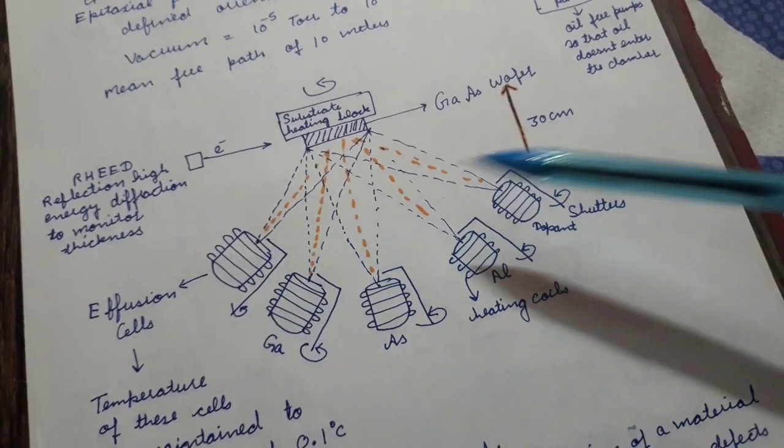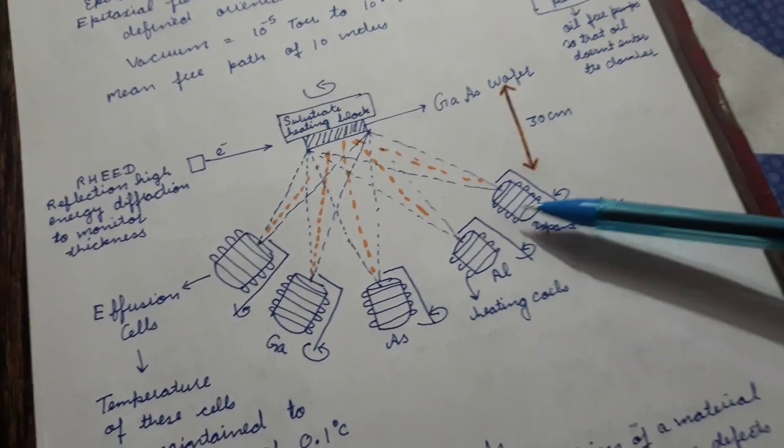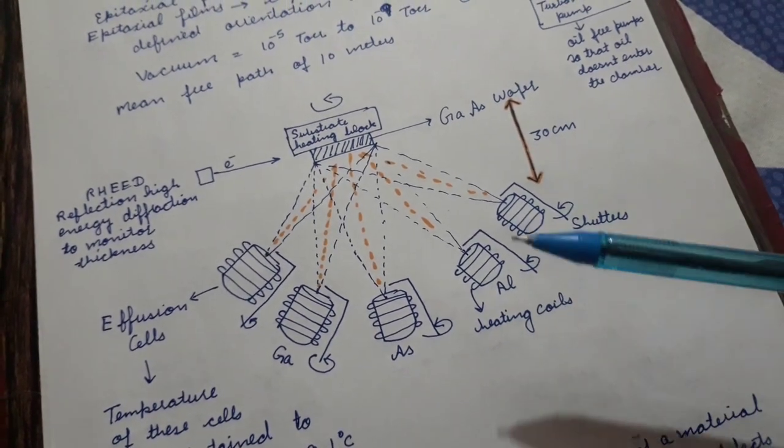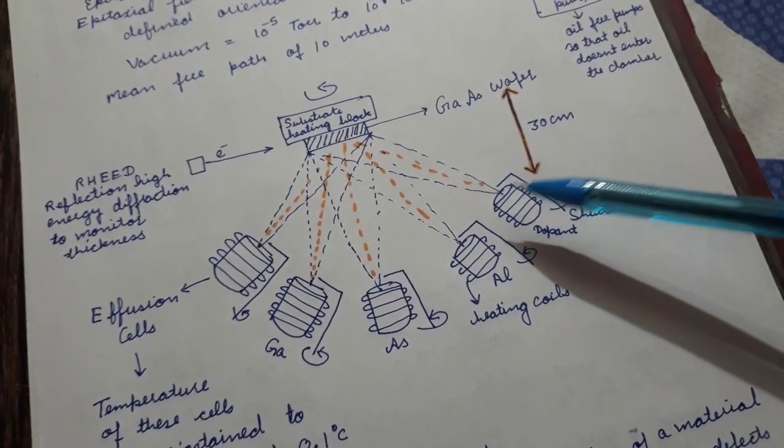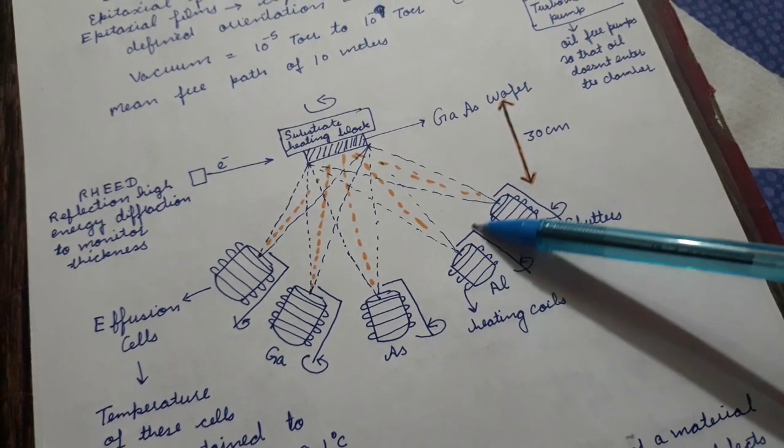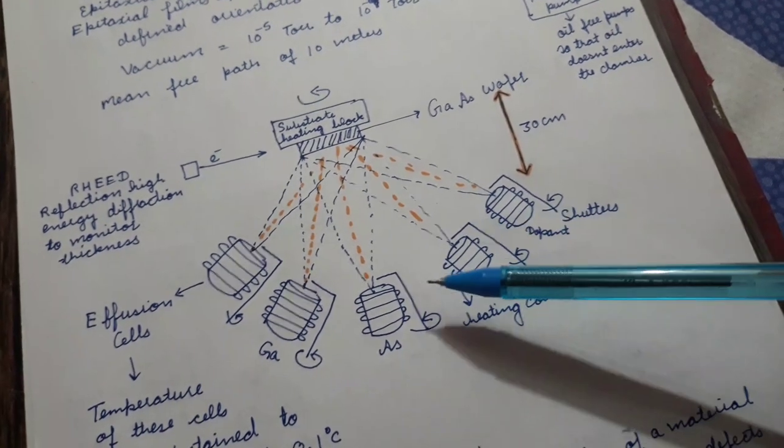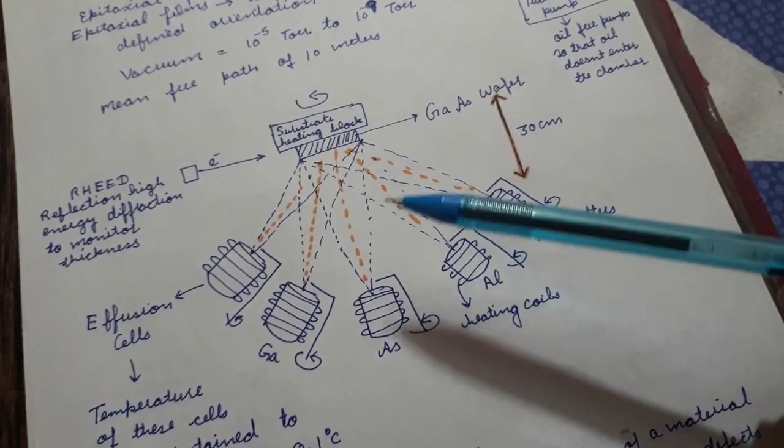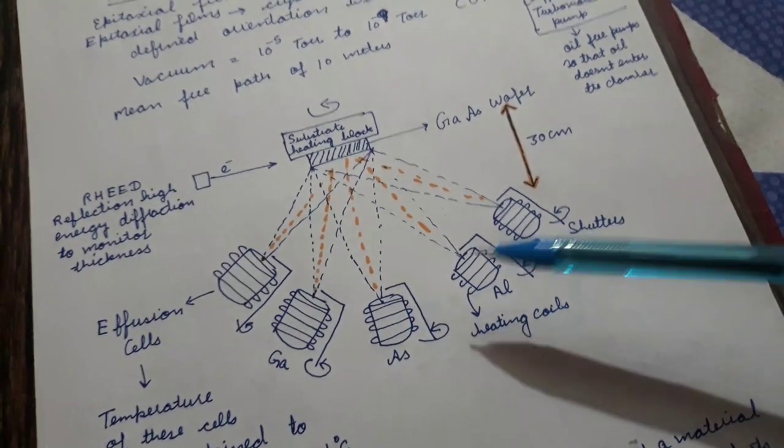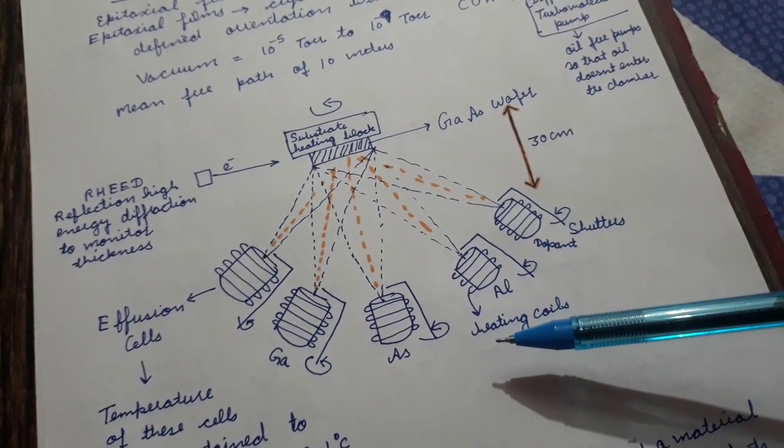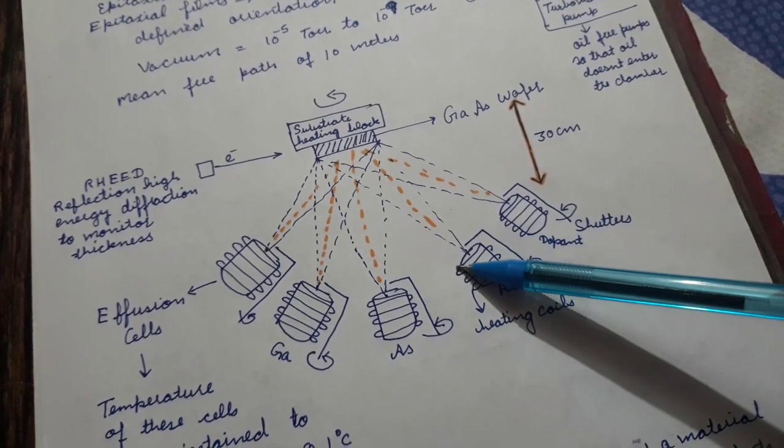You can also use other effusion cells with other dopants and dope gallium arsenide with other dopants as well. You have shutters on these effusion cells so that once you're done, you can quickly close the shutters and no excess amount of material will be deposited.